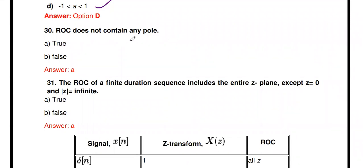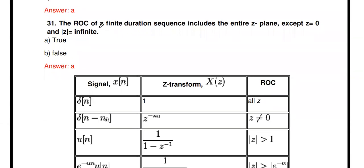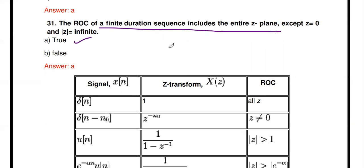The ROC does not contain any pole — true. Poles are the roots of the denominator polynomial, and no poles exist within the ROC. The ROC of a finite duration sequence includes the entire Z-plane except Z = 0 and Z = infinity — true. For example, x[n] = {1, 2, 3} is a finite duration sequence, and its ROC is the entire Z-plane except Z = 0 and Z = infinity.